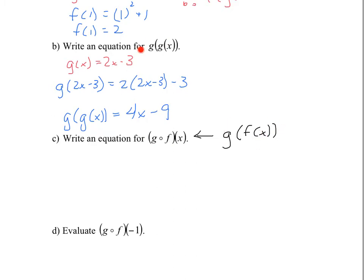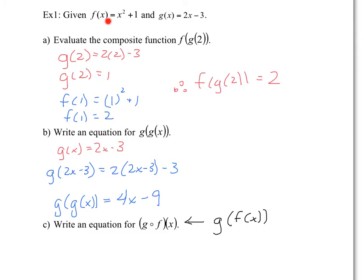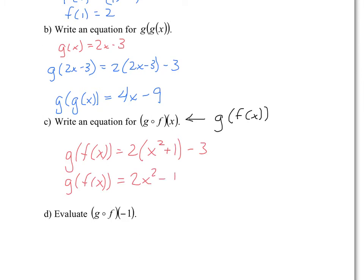Same idea — except here I'm plugging in f of x inside of g. So g of f of x is equal to 2 times (x squared plus 1) minus 3. So g of x is 2x minus 3, and f of x inside is just x squared plus 1. I'm plugging in x squared plus 1 inside of g of x. Simplifying: 2x squared plus 2 minus 3, which is 2x squared minus 1.